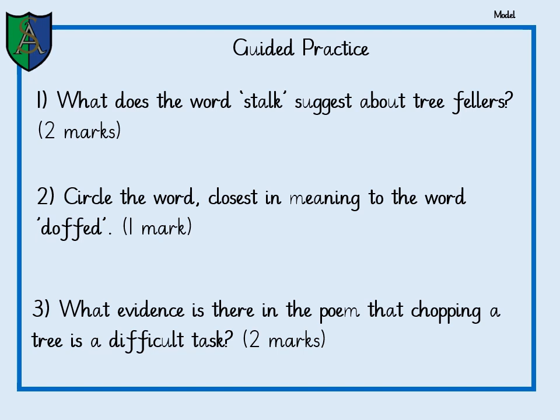Here are some guided questions to help us before we start. The first one says: what does the word stalk suggest about tree fellers? Well, if I think about what stalks, it's kind of like a ferocious animal stalking its prey. The word stalk suggests that they're hunting something, wanting to kill it. It suggests they're dangerous and they're out to hurt something, or they are prowling around trying to find something to hunt. It really gives them an almost animalistic quality.